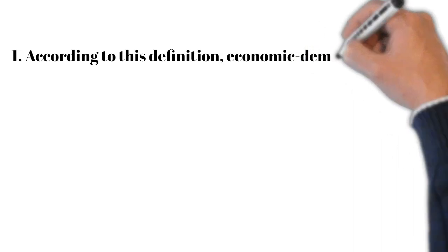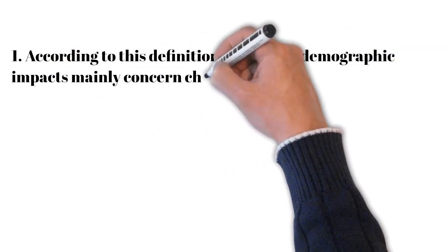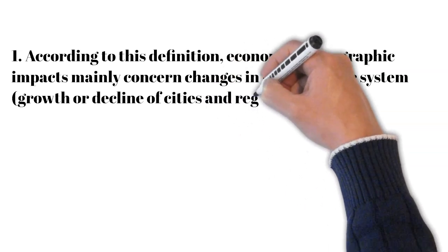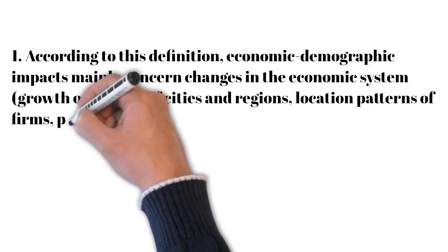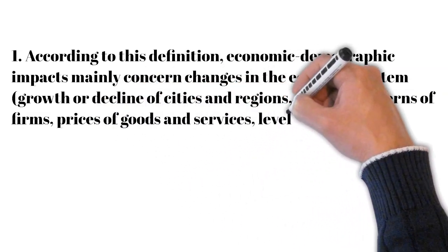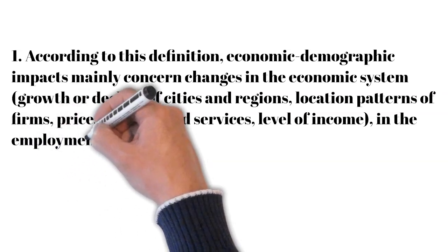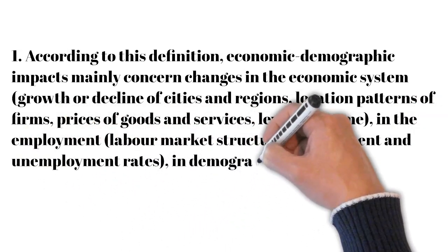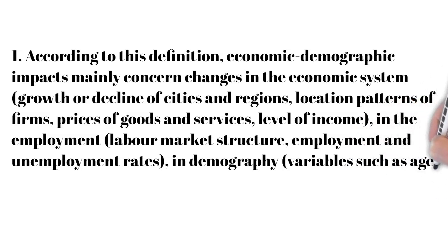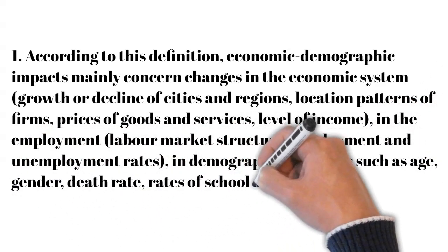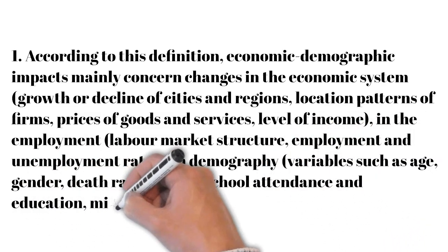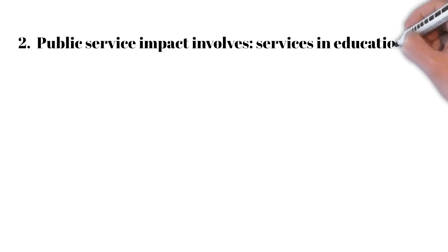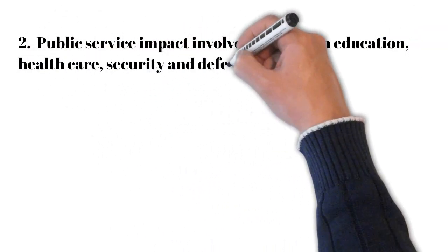According to this definition, economic demographic impact mainly concerns changes in the economic system — that is, the growth or decline of cities and regions — location patterns, price of goods and services, level of incomes, and the labor market structure, including employment and unemployment rates, as well as income impacts related to factors such as age, gender, death rate, rate of school attendance, education, and migration. Public service impact involves services in education, healthcare, security, and defense.